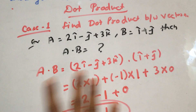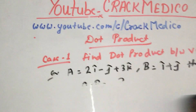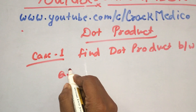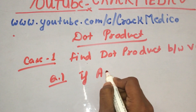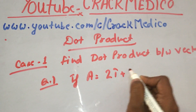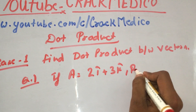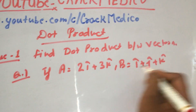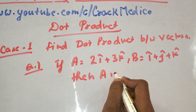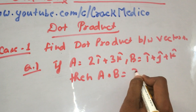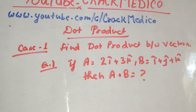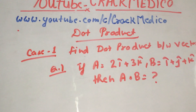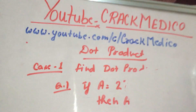Please solve the below practice question. Question number 1: if A is equal to 2i plus 3k and B is equal to i plus j plus k, then what is A·B? Please solve that question and comment what the answer will be. That is Case 1 on the dot product.